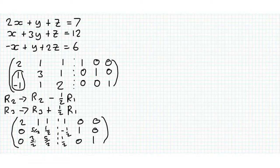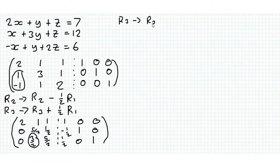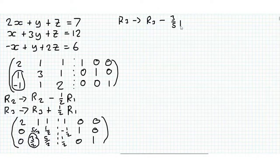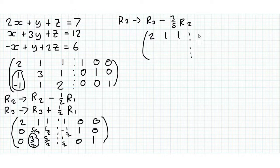Now we want to make this element 0, and we don't want to use row 1 because if we use row 1 we're going to get rid of one of the 0s we've already created, so we're going to use row 2. The operation we're going to do is: row 3 goes to row 3 minus 3/5 row 2.